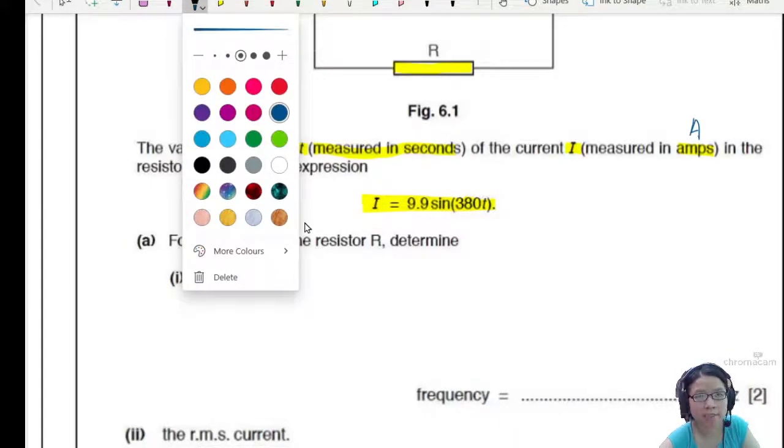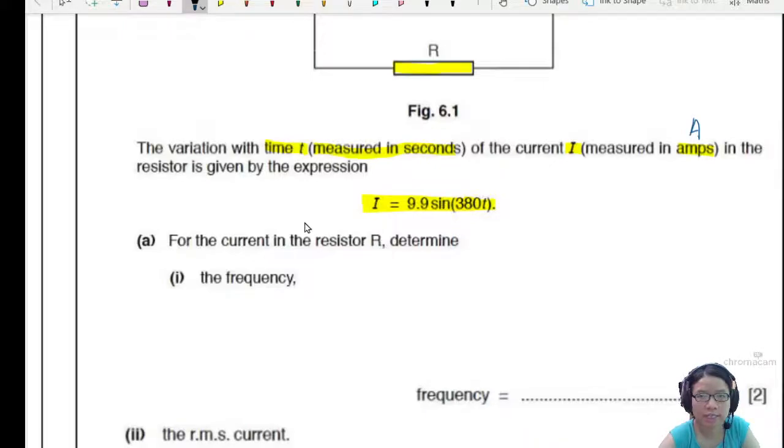So for this part we need to think about what the general equation is. The general equation for alternating current I will be equal to I₀ sin ωt. So by comparison, we can see that omega is the coefficient or the multiple in front of T. Meaning this 380 will be your omega.